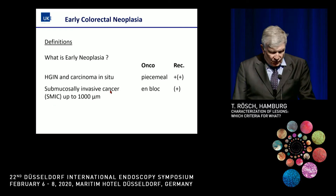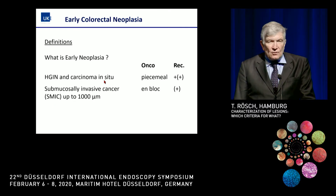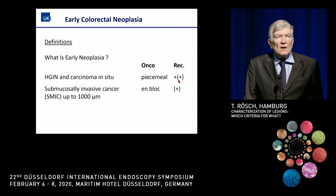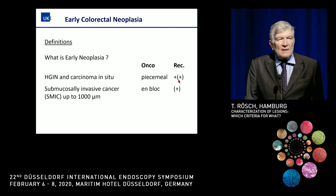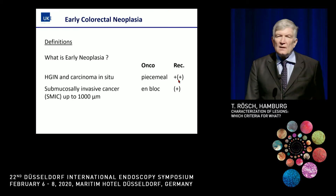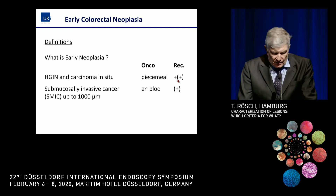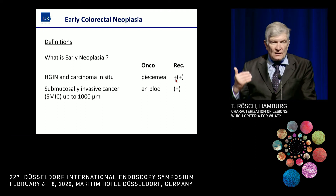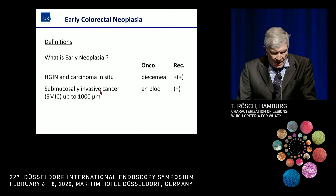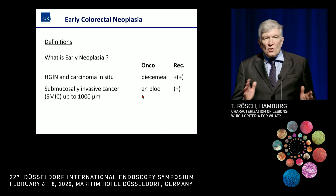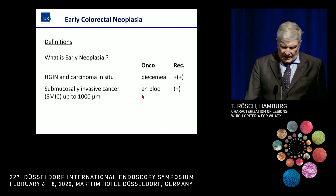Why is this important? High-grade lesions can be resected piecemeal oncologically, with some recurrence rate — in some studies up to 40%, but in a recent randomized trial from Australia using margin coagulation, down to 5%. If you're dealing with cancer in a strict way, from an oncological standpoint, there has to be en bloc resection.